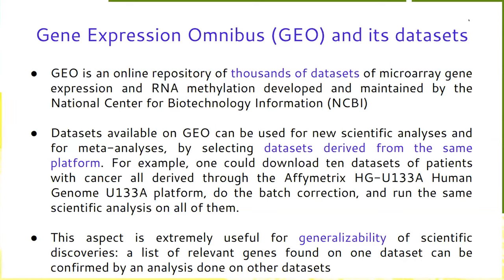By selecting datasets derived from the same platform, one can be sure that they will have the same probe sets — they will be compatible with each other. This allows researchers to first perform batch correction and then carry out scientific analysis across all of them, for example checking whether the most relevant genes for a specific outcome found in one dataset — such as prognostic or diagnostic genes — are also relevant in another.